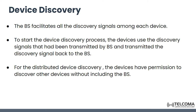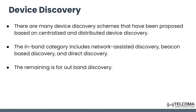To start the discovery process, devices use discovery signals transmitted by the base station and transfer information back to the base station. For distributed device discovery, devices have permission to discover other devices without involving the base station. Many schemes have been proposed based on centralized or distributed discovery. In the in-band category, this includes network-assisted discovery, beacon-based discovery, and direct discovery. The remaining category is out-of-band.